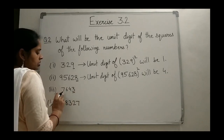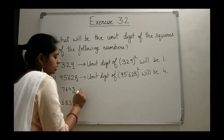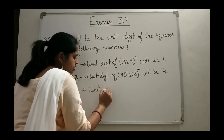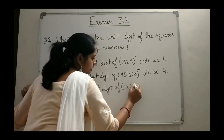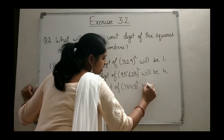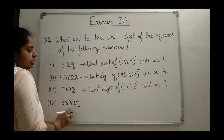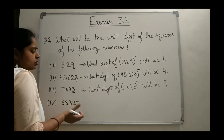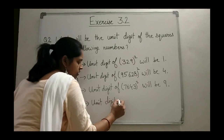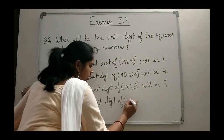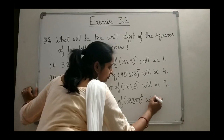For 7,643, the unit digit is 3, and 3 squared is 9. So the unit digit of the square of 7,643 will be 9. For 68,327, the unit digit is 7, and 7 × 7 = 49, so the unit digit of its square will also be 9.